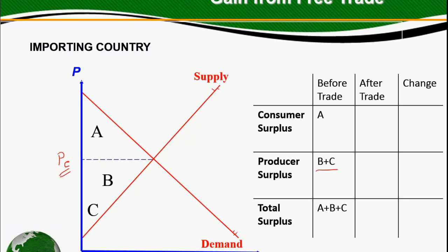Now, what happens when this country opens up to trade? The world price, which is given by PW in this case, is below the equilibrium price PE. Since the good is cheaper in the world market, the country would want to import the good. So at the world price PW, this is the demand and this is the supply. The excess demand is how much the country would import from the world market.